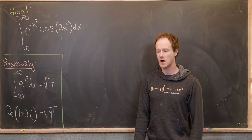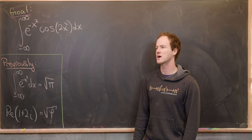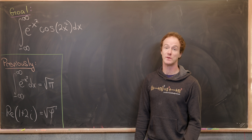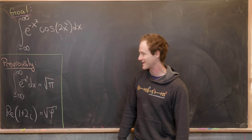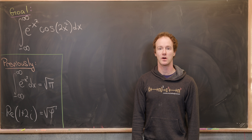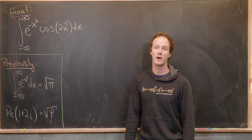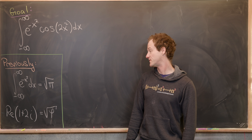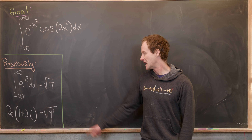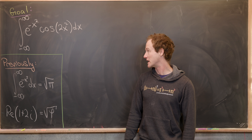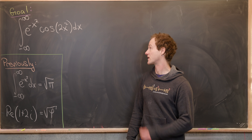I've actually done this in a couple of videos; the most recent one was where I did it with the squeeze theorem. Next, we're going to use the fact that the real part of the square root of 1 plus 2i is equal to the square root of phi, where phi is the golden ratio. I did that in a previous video as well, so I'll let you guys check those out.